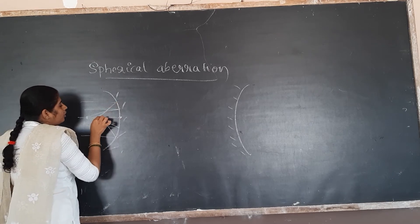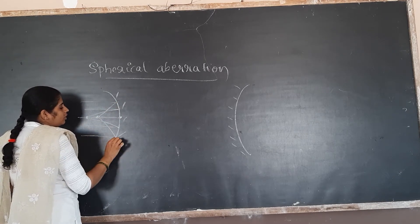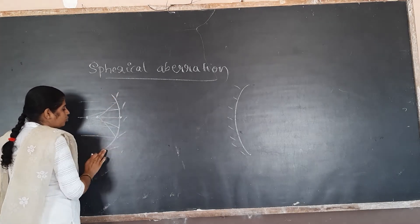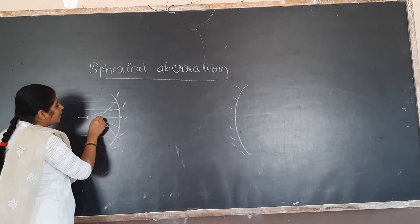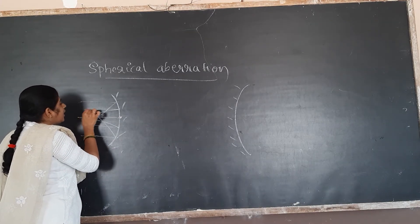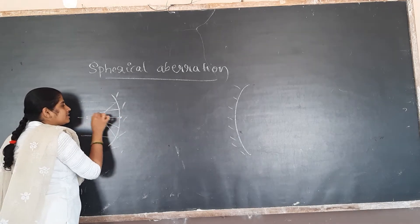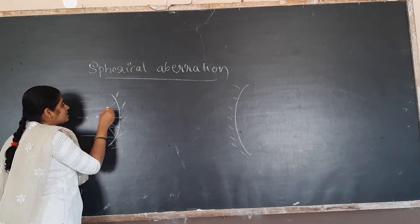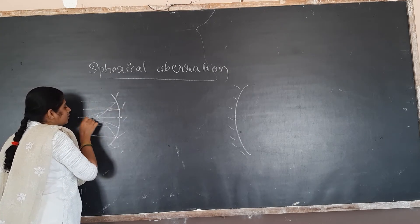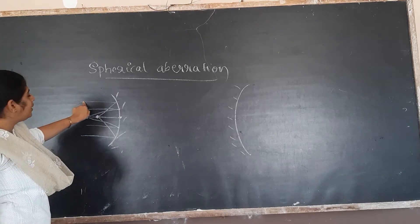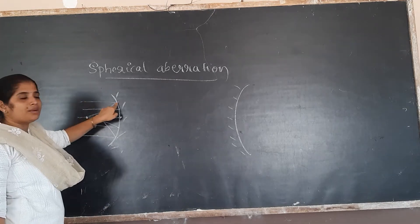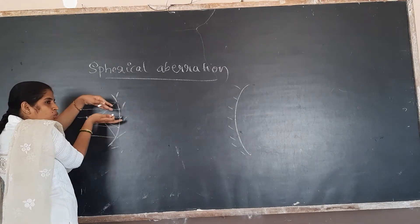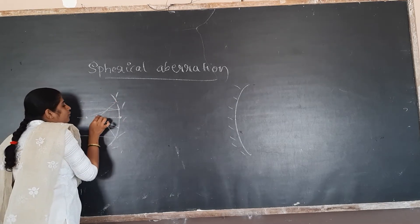So this ray gets a focus here at the edge. If you consider this is a mirror, this is an edge point. So for an edge point, you are getting a focus here. The rays which are nearer to the principal axis get their focus farther. So when a light ray enters at the margin — meaning the edge — the light ray will bend more, and you will get the focus nearer to the pole.